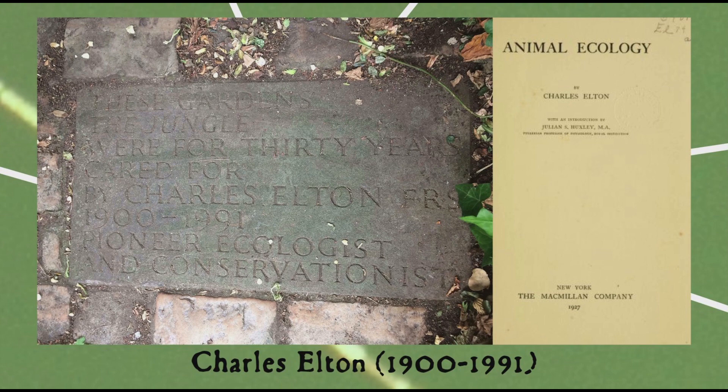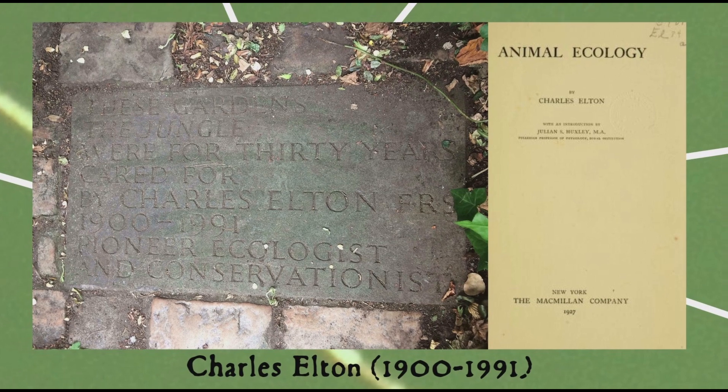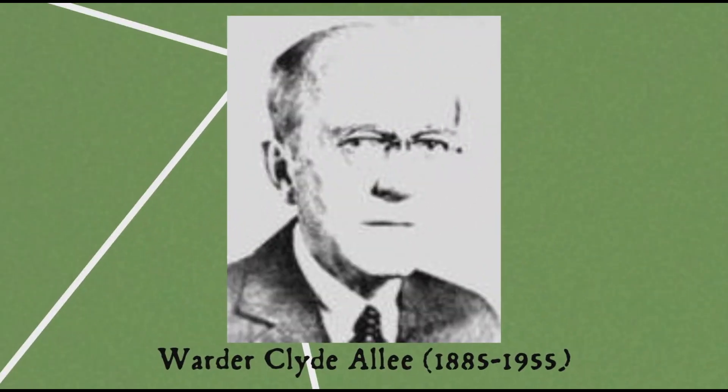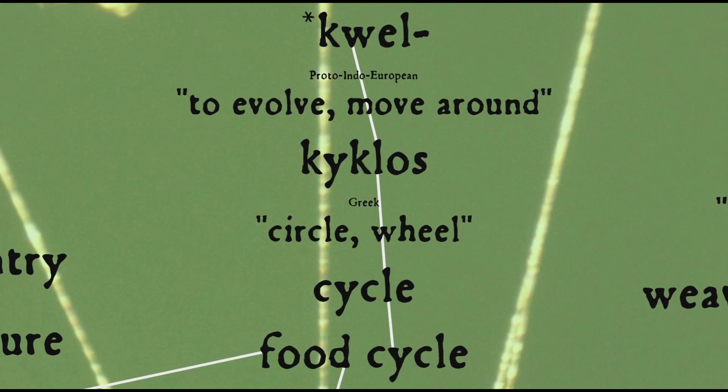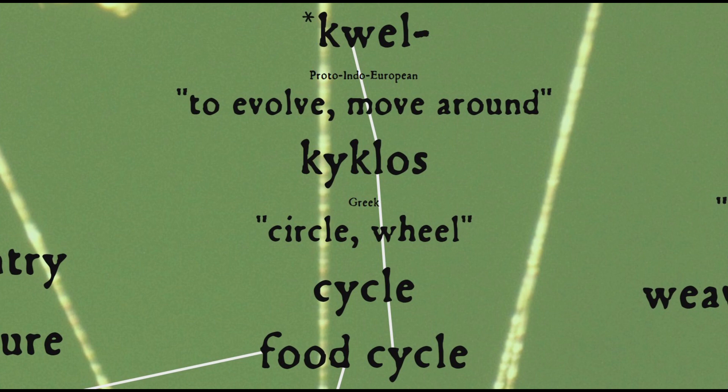The concept of the food web was first formally proposed by the highly influential ecologist Charles Elton in his 1927 book Animal Ecology, though there were forerunners who were thinking along the same lines. But Elton didn't use the term food web — instead calling it a food cycle, a term that had already been used in the 19th century. A little after Elton's book, in 1932, Warder Clyde Allee, also a pioneering ecologist, used the term food web to describe this concept, and that's the one that stuck.